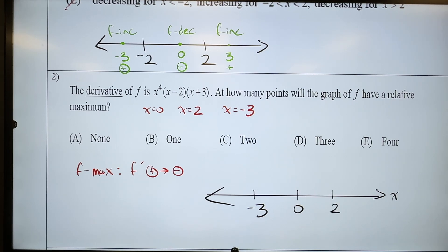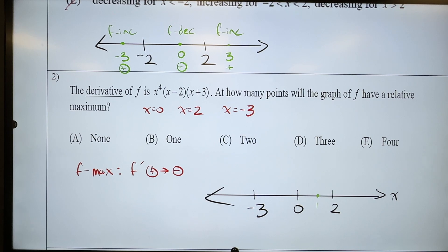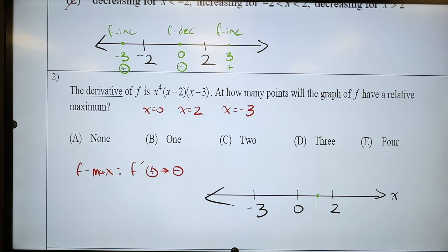Then I see if I have a sign change that goes from positive to negative. Let's do a test point — I'm going to choose one. When I plug in a 1, this number will always be positive because it's one times one times one times one — it's a power. Even power means it's always positive. When I plug in 1 to the (x minus 2) factor, I get 1 minus 2, which is a negative. And when I plug in 1 to the (x plus 3) factor, I get 1 plus 3, which is four — a positive.